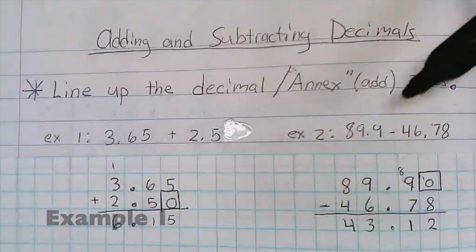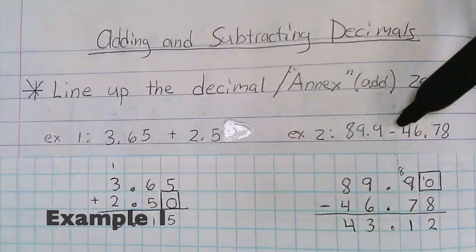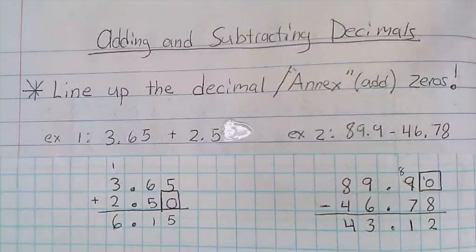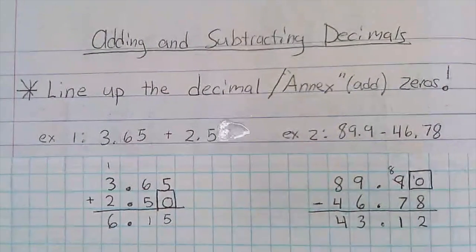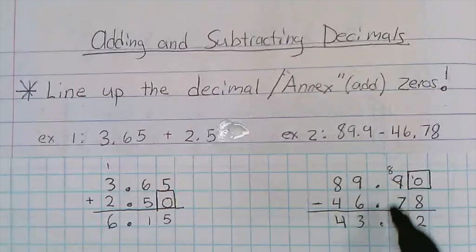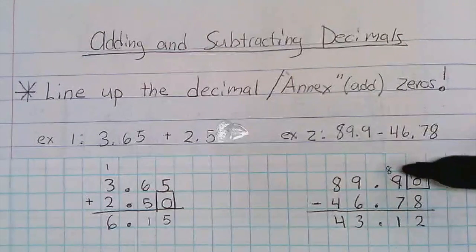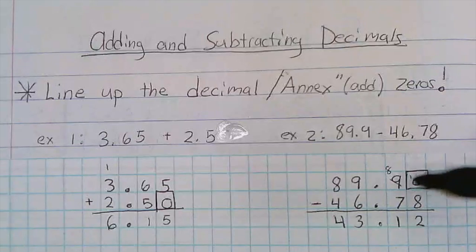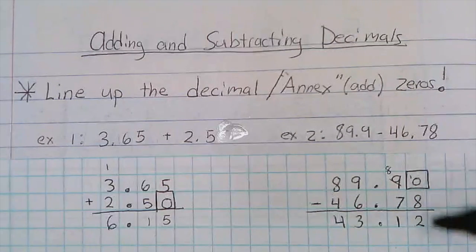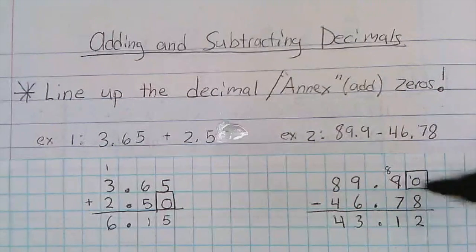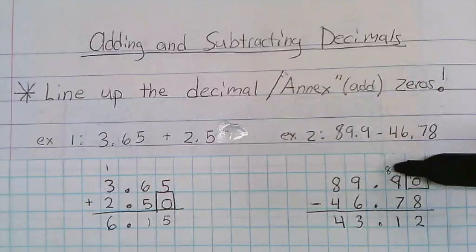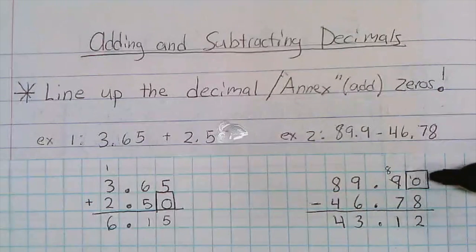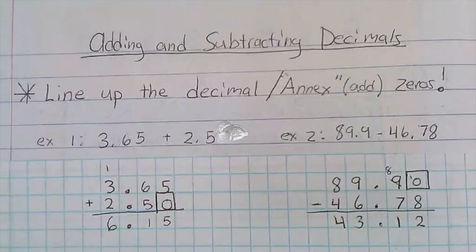Let's look at an example. Here we have 89.9 minus 46.78. I wrote it down in the blocks, I made sure that I lined up the decimals, and then here since it was only 89.9, I had to add in a zero before I went and I subtracted them down. Zero minus eight doesn't work, I borrowed one, I wrote it there, ten minus eight is two, and it went like that. And then there is your answer.